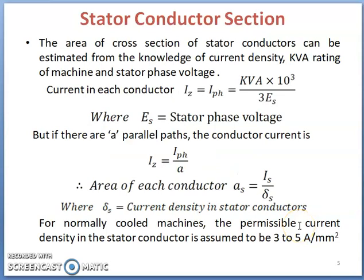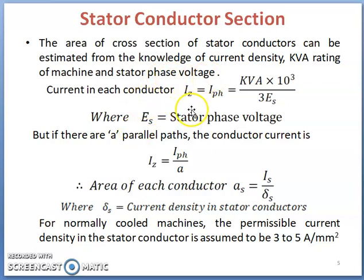To find the cross-sectional area of each conductor, the stator current as well as current density in the stator conductor should be known. The area of cross-section of stator conductors can be estimated from knowledge of current density, kVA rating of the machine, and stator phase voltage. Current in each conductor Ij equals Iph, which equals Q (kVA rating) times 10 to the power of 3 divided by 3*Es, since Q equals 3 * Es * Iph.